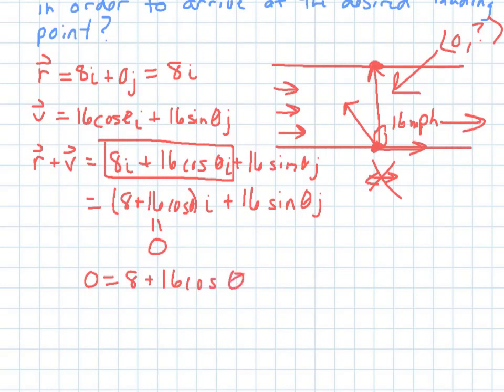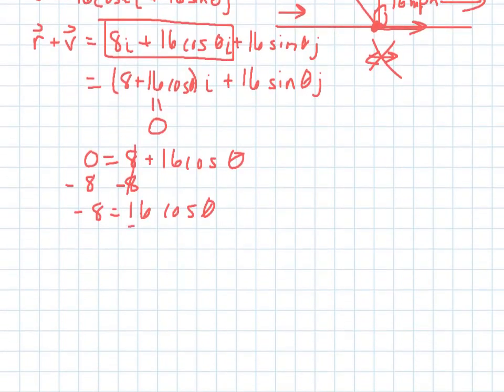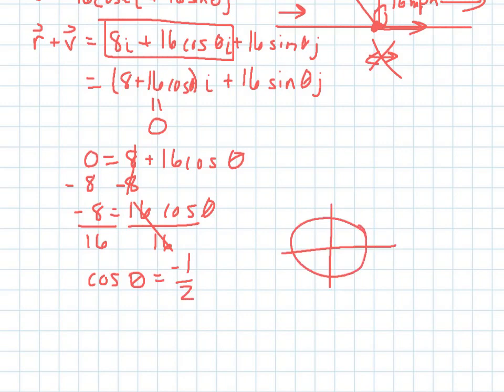Now I have an equation that I can actually solve to help me find theta. So I want to subtract 8, and then I want to divide by 16. And negative 8 over 16 reduces to negative 1 half. So now I have a ratio that's on my unit circle, which is nice, negative 1 half.